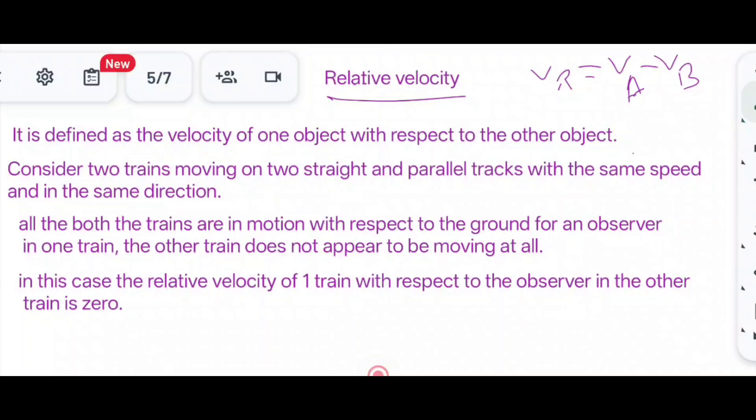Let me explain with an example. Consider two trains moving on two straight and parallel tracks with the same speed and in the same direction. Both trains are in motion with respect to the ground. For an observer in one train, the other train does not appear to be moving at all. In this case, the relative velocity of one train with respect to the observer in the other train is zero. If Va equals Vb, then Vr equals zero.